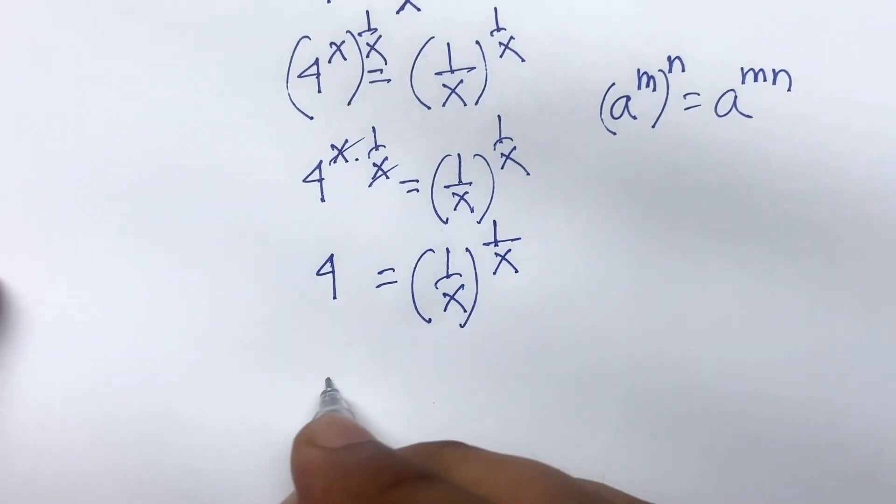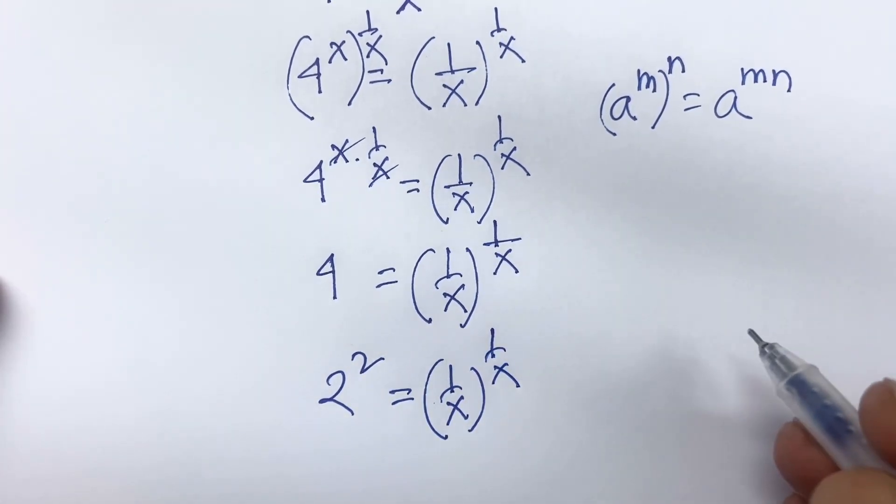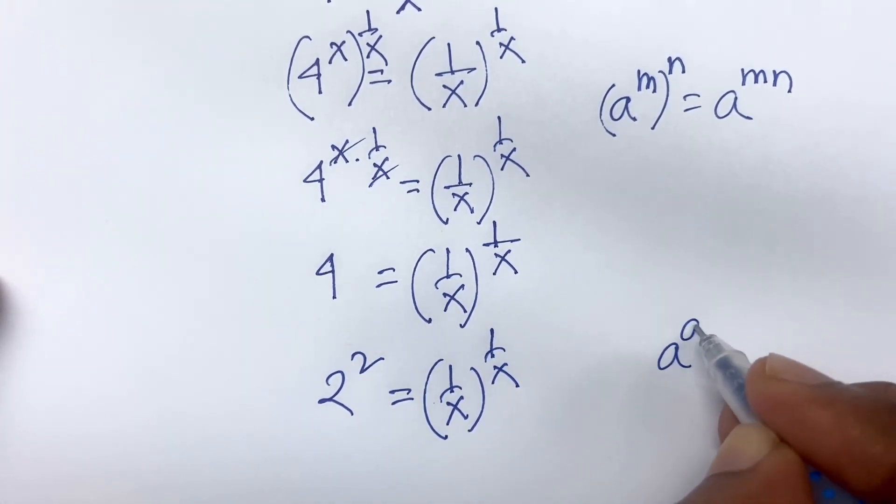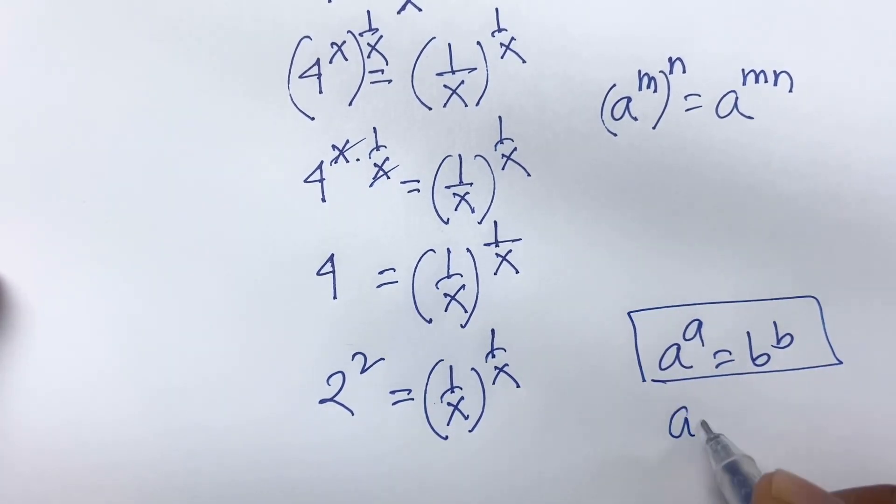Now, 4 is 2 to the power 2 is equal to 1 over x bracket 1 over x. Now, we know that a to the power a is equal to b to the power b. Here is a equal to b.